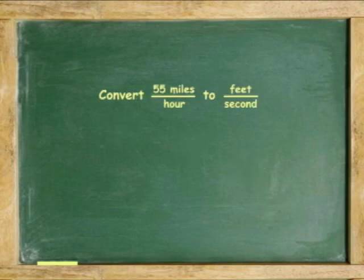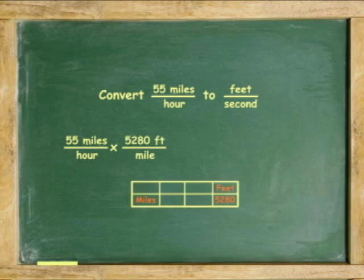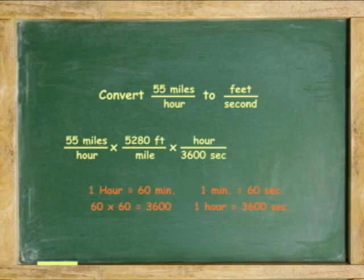Another example. Convert 55 miles per hour to feet per second. 55 miles per 1 hour times 5,280 feet in 1 mile times 1 hour has 3,600 seconds. Cancel miles, cancel hours. 55 times 5,280 divided by 3,600 equals 80.7 feet per second.